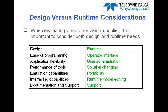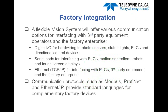A flexible vision system will offer various communication options for interfacing with other equipment. Digital I/O for hardwiring photo sensors, status lights, PLCs, and solenoid kickers are a consideration. Serial ports for interfacing with PLCs, motion controllers, robots, and touch screen displays. Ethernet port, which is one of the more important ones these days, is commonly used to interface with PLCs, other third-party equipment, and factory enterprise systems. Communication protocols such as Modbus, Profinet, and Ethernet IP all provide standard communication languages for interfacing with complementary factory devices.